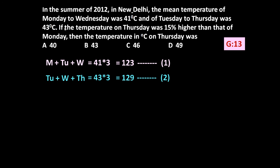Next, if the temperature on Thursday was 15 percent higher than that of Monday, it means the temperature of Thursday equals 1.15 times the temperature of Monday — whatever Monday's temperature is, Thursday's is 15 percent more. This is equation number three.